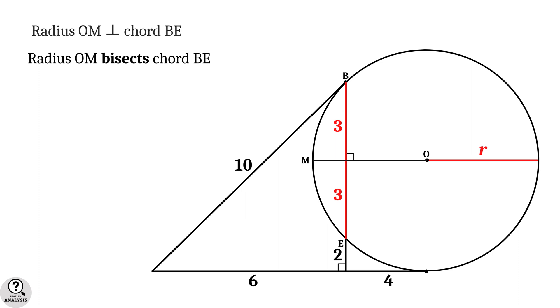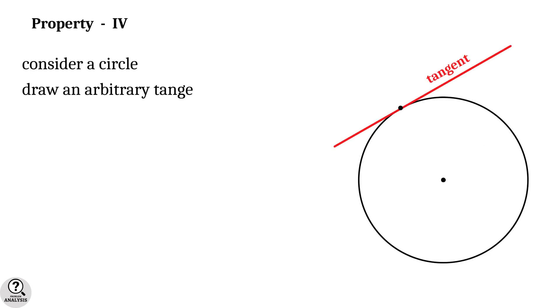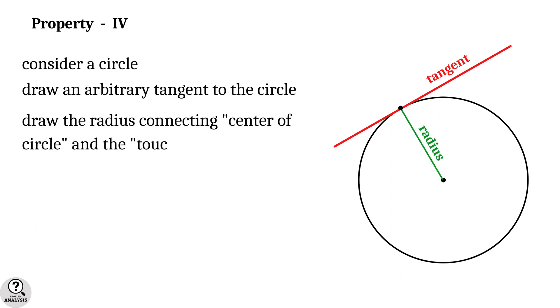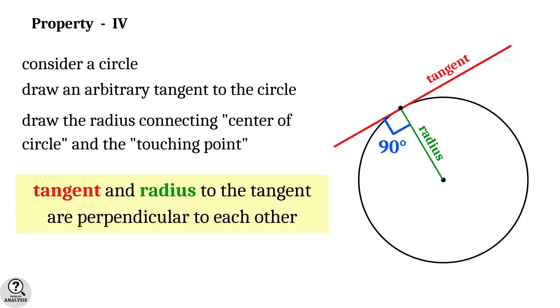Now we are almost done. We have to note the last property of tangents. So, property 4. Consider a circle and draw an arbitrary tangent to the circle. Now draw the radius connecting the center of the circle and the touching point of the tangent. Then the fact is tangent and radius to the tangent are perpendicular to each other.